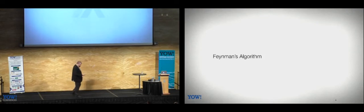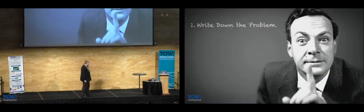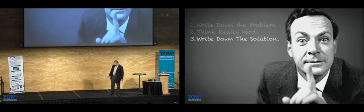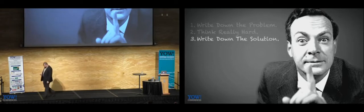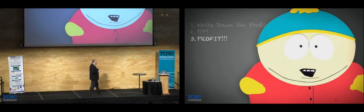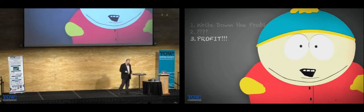And one of the things that he was well known for was Feynman's algorithm. And Feynman's algorithm consists effectively of writing down the problem, thinking really hard, and writing down the solution. And it was a great algorithm when we had Feynman to run it on. So, I can attest to a similar sage, write down the problem, profit. And the problem with Cartman's algorithm is that it can't be taught.